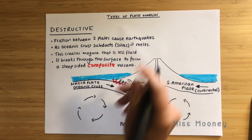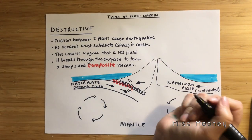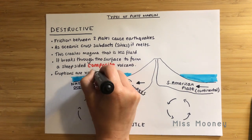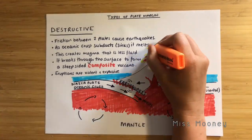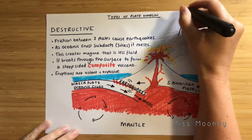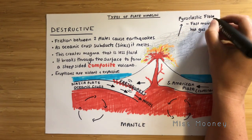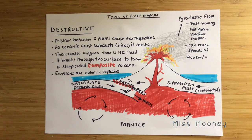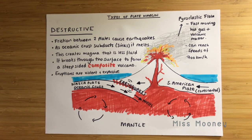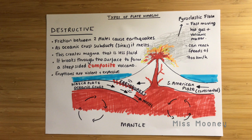When magma escapes through these weaknesses, it rises up through a composite volcano. Composite volcanoes are different from shield volcanoes because they are steep-sided, as the lava doesn't flow very far before it solidifies. The volcanic eruptions are often very violent with lots of steam, gas and ash. The hot gas and volcanic matter that erupts is called pyroclastic flow, reaching speeds of up to 700 kilometres per hour — often the main cause of death in a volcanic eruption. Examples include the west coast of the Americas, Japan where the Philippine Sea plate is pushed under the Eurasian plate, and the Nazca plate subducting under the South American plate.